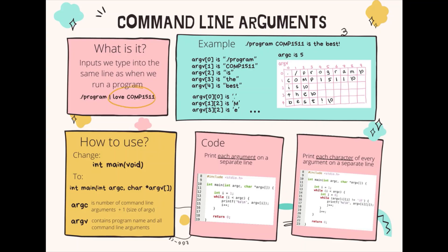To summarize, command line arguments are another way to retrieve input for our program and are particularly useful when we require the information before we start executing the program. argc is an integer representing the number of command line arguments plus 1, and argv is an array of null-terminated strings containing the program name and all the command line arguments. We can use this information and loop through the array just like any other arrays we have encountered before.